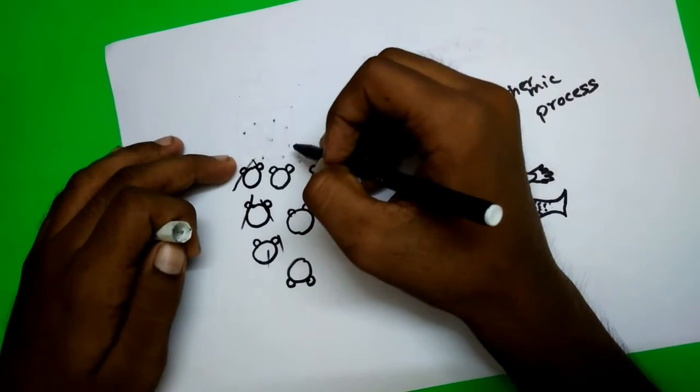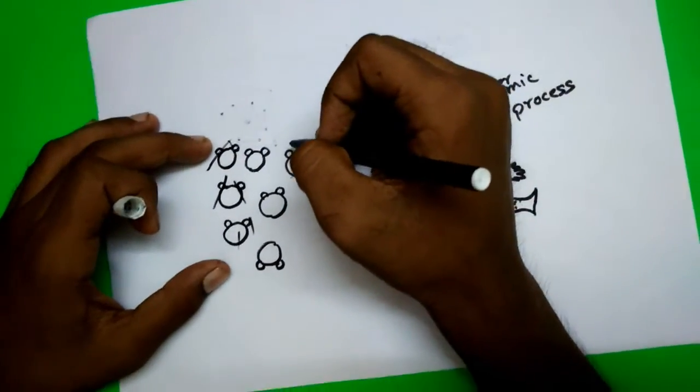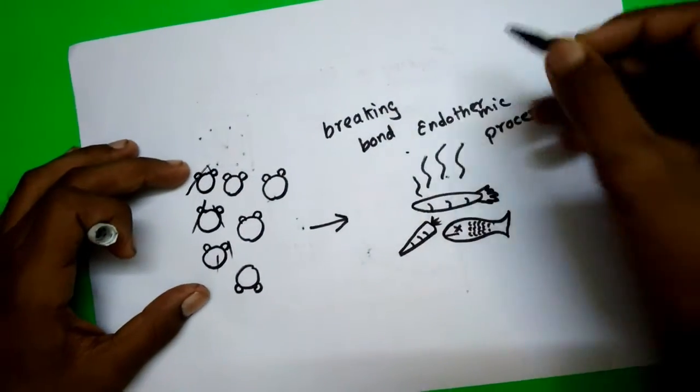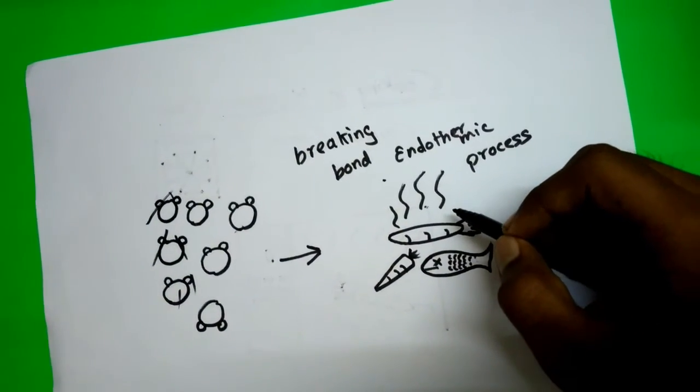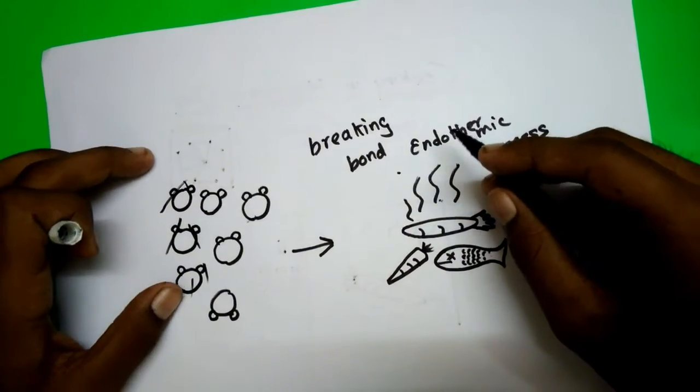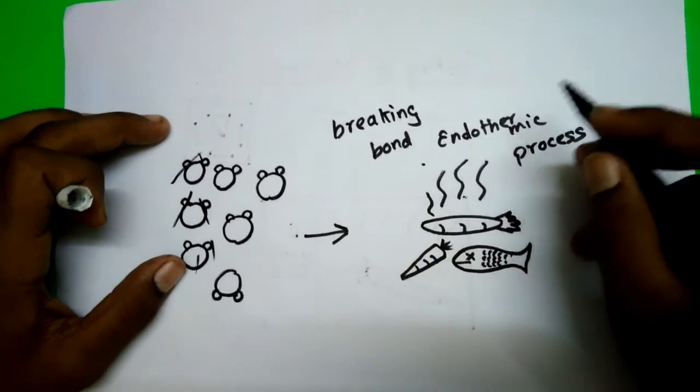We know that breaking of a bond is an endothermic process which in turn heats the nearby food molecules, and thus the food is heated. It is better to cook in microwave ovens than cooking with water.